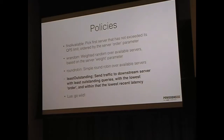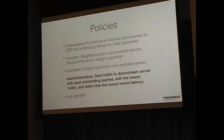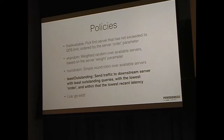What load balancing policies do we have? 'First available' helps with QPS limits — that's what we originally built. Query concentration: the first 10,000 queries per second always go to the first server, the next 10,000 to the second, et cetera. Weighted random: this server gets 20% of traffic, another 60%, another 20%. Round robin — just what you're thinking. Least outstanding is the default. You can also set orders so you try some servers first and if they're all full you try others. And finally you can write your own policies in Lua — if you want to serve all queries with a prime number in them to a different server, go wild.